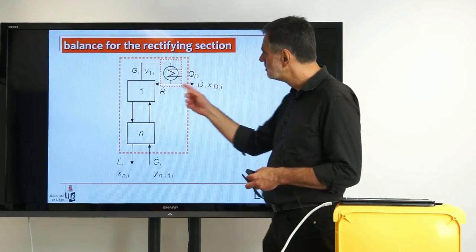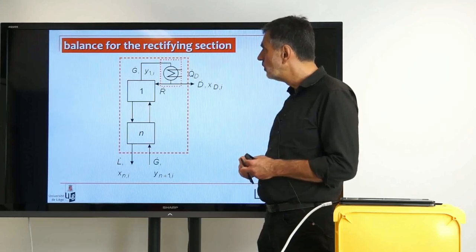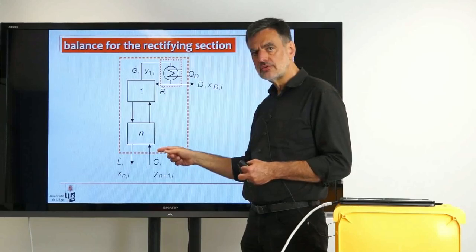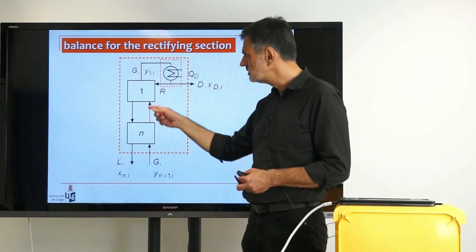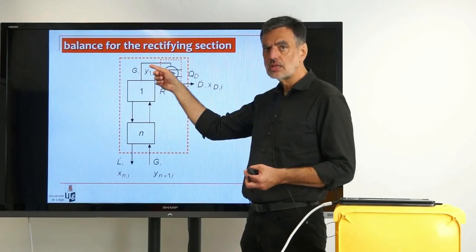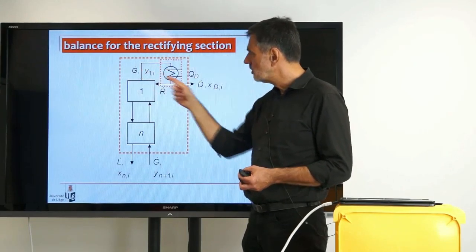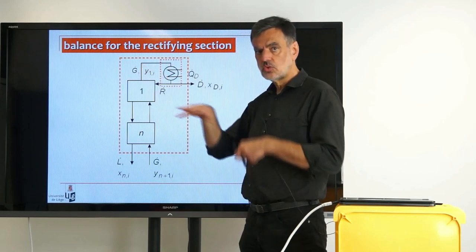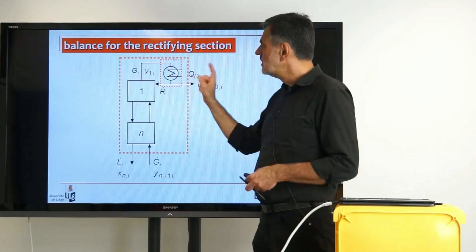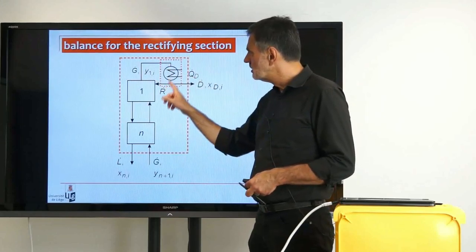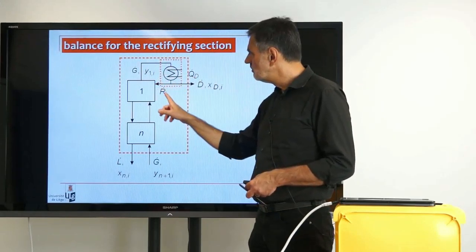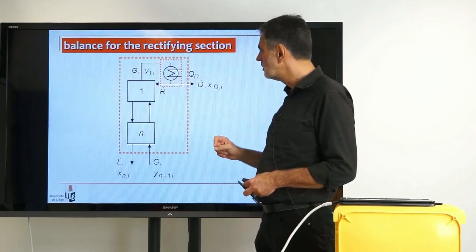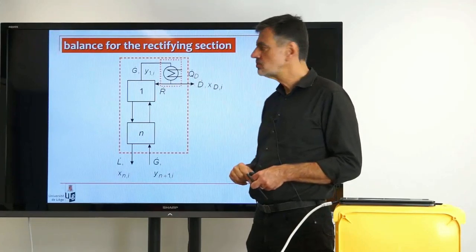I have also plotted a smaller control volume where the G-dot is entering. Remember: equimolar evaporation condensation means G-dot is constant along the entire column section. Because we have one liquid entering, one liquid leaving, one vapor entering, one vapor leaving. This G-dot leaves and enters the second control volume; the R-dot (the reflux) is leaving that control volume, and the D-dot (distillate) is leaving as well.